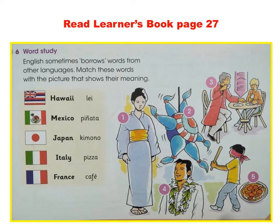Bahasa Inggris itu meminjam kata-kata dari bahasa yang lainnya. Contoh yang ada di sini: Lay, kalung bunga, comes from Hawaii. Jadi lay itu dipinjam dari Hawaii. Pinata comes from Mexico.